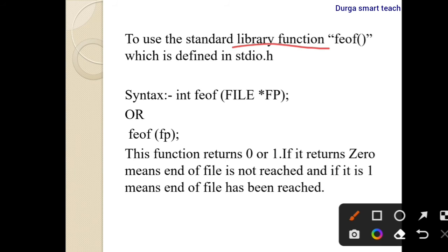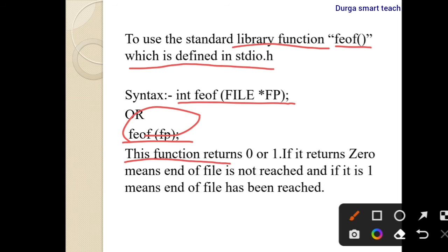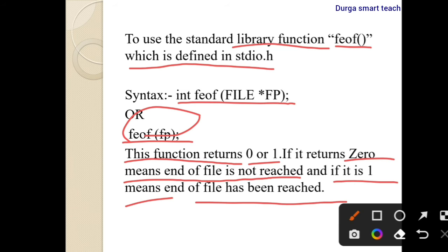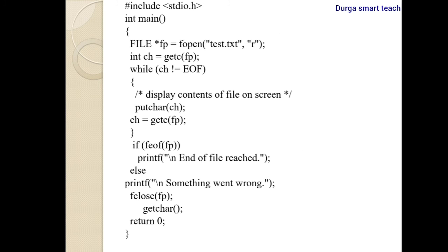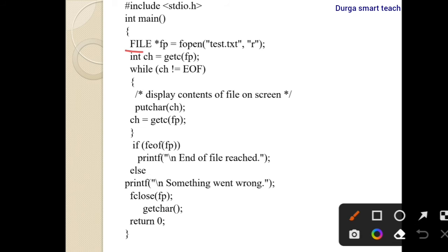To use the standard library function feof(), which is defined in stdio.h, the syntax is: int feof(FILE *fp) or feof(fp). This function returns either zero or one. If the returned value is zero, it means end of file is not reached. If it returns one, end of file is reached.